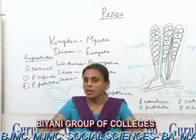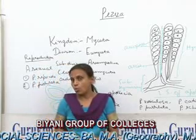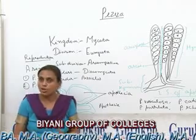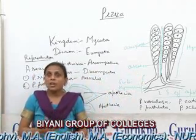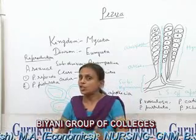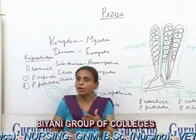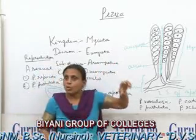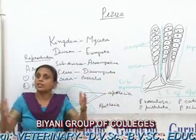Sexual reproduction in Peziza occurs not by means of specialized sex organs such as antheridia and oogonia, but by means of somatogamous copulation. The hyphae ramify so much that they form a pseudoparenchymatous structure. Adjacent cells of the hyphae come into close contact and their nuclei pair to form a dikaryon — this dikaryotic condition is also found in Peziza vesiculosa. Some nuclei of the same cell also fuse to form a dikaryon, a condition known as autogamous pairing.